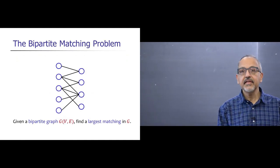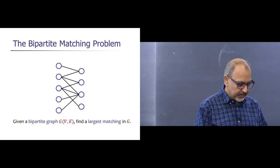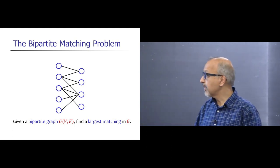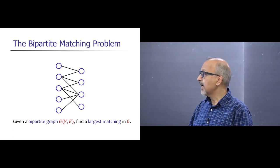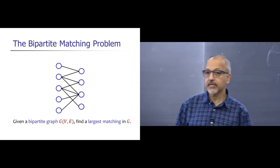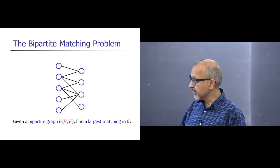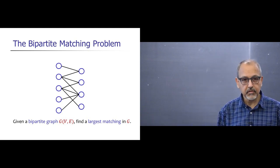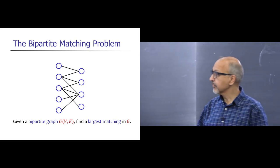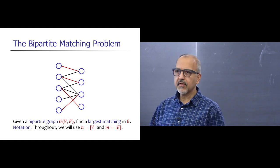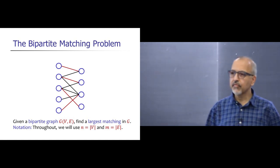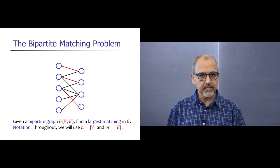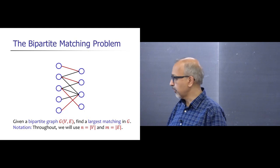Let me quickly remind everyone of the definition of the bipartite matching problem. You're given a bipartite graph G, and the goal is to find a matching of the largest possible size in this graph. In this example, the red edges form a possible solution to this problem. Throughout the talk, the number of vertices in the graph will be denoted by n, and the number of edges by m.